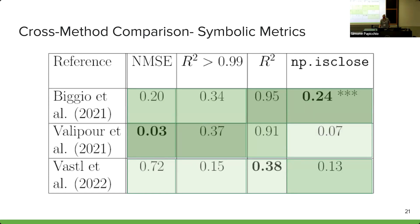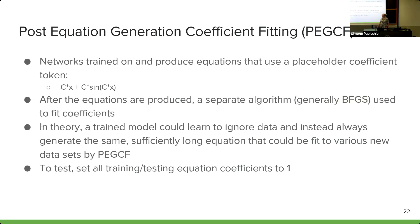Another issue with numeric metrics is that you need to take the produced equation and get y values out of them, which requires coefficients. We need to discuss post-equation-generation coefficient fitting. When NSR networks are trained and produce equations, they use a placeholder coefficient token — these equations are produced as strings, and the C token is what the networks produce. Only after the equations are produced does a separate algorithm, generally the BFGS algorithm, fit the coefficients.